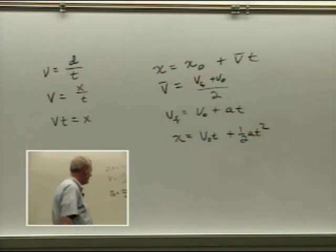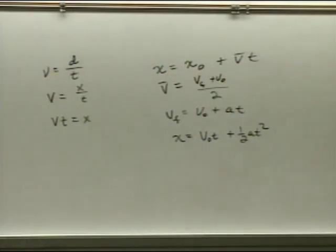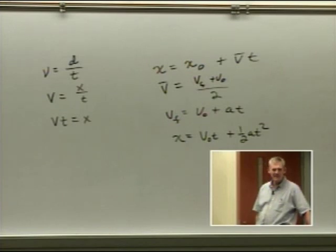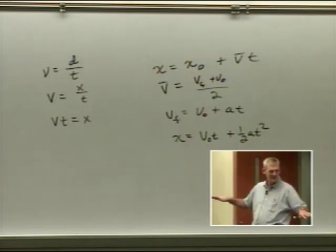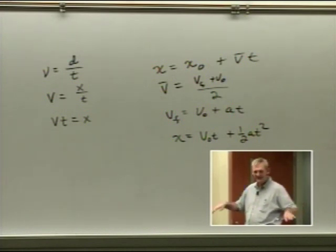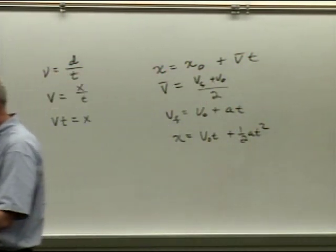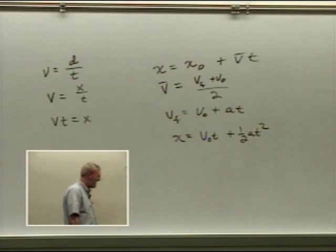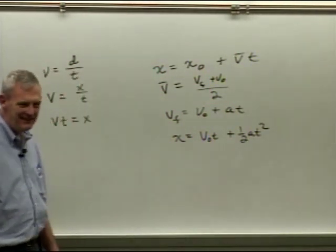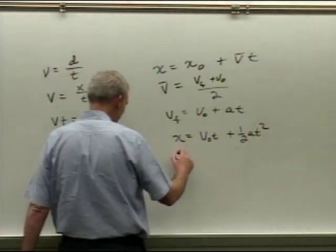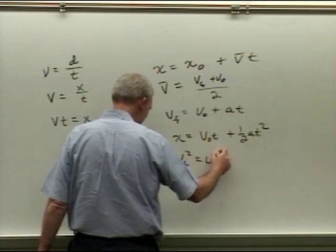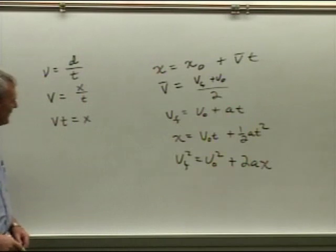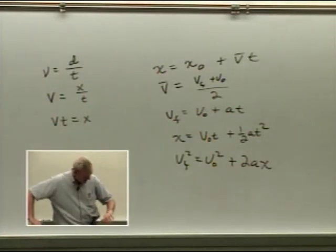If you knew the initial velocity, the acceleration, and the position x, you could figure out time — but you'd have to use the quadratic formula: x = (−b ± √(b²−4ac)) / 2a. Last but not least, we have v_f² = v₀² + 2a·x. Those are the five equations of kinematics. We'll talk about free fall at the end of the hour.